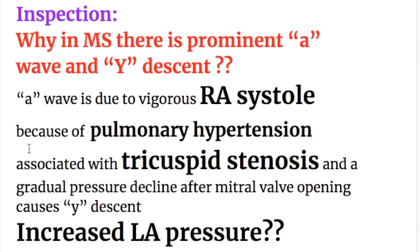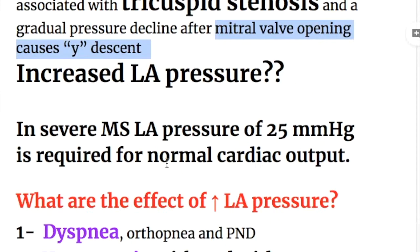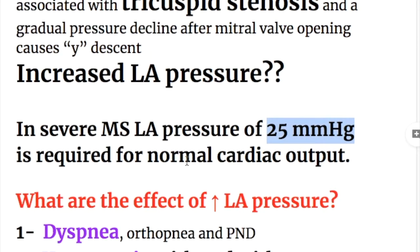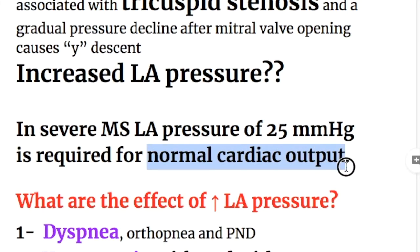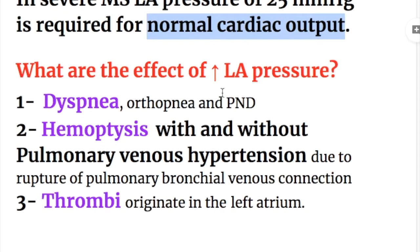The A wave occurs due to pulmonary hypertension associated with tricuspid stenosis, and a gradual pressure decline after mitral valve opening causes the Y descent. There is increased left atrial pressure in mitral stenosis. In severe mitral stenosis, a left atrial pressure of 25 mmHg is required for normal cardiac output. The effects of increased left atrial pressure are as follows.